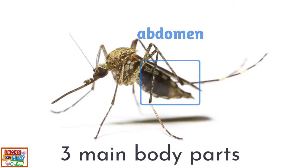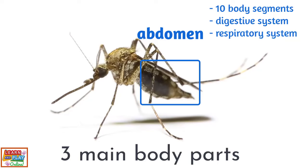The last and third body part of a mosquito is the abdomen. The abdomen itself is made up of ten body segments. This is where you will find the digestive, respiratory and reproductive systems of a mosquito.